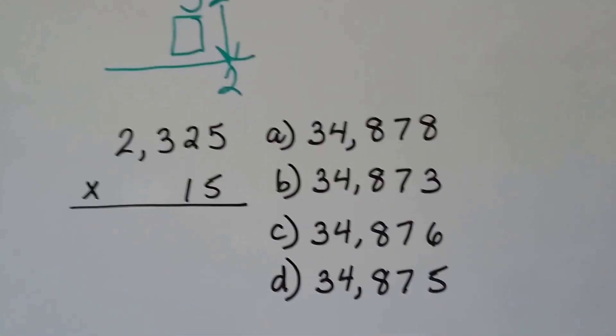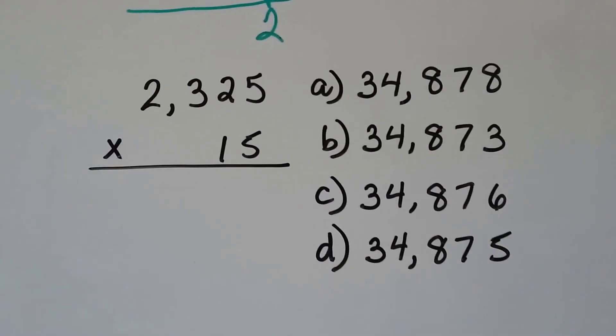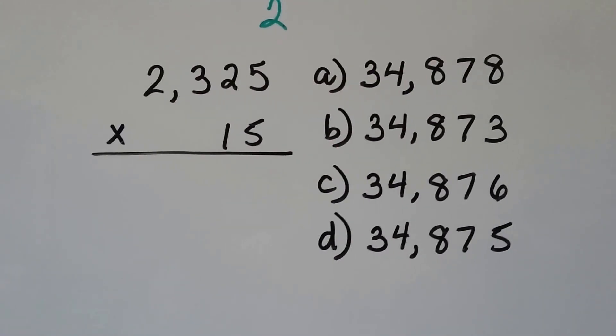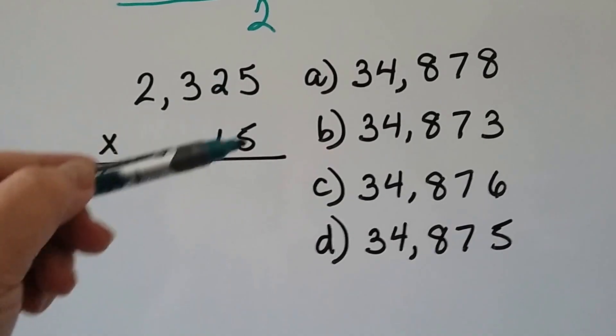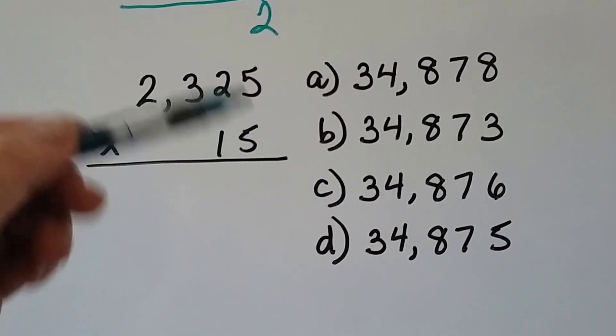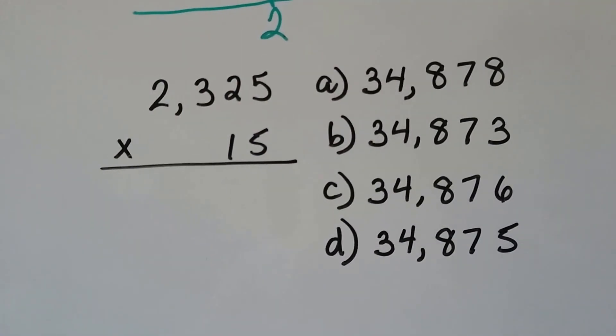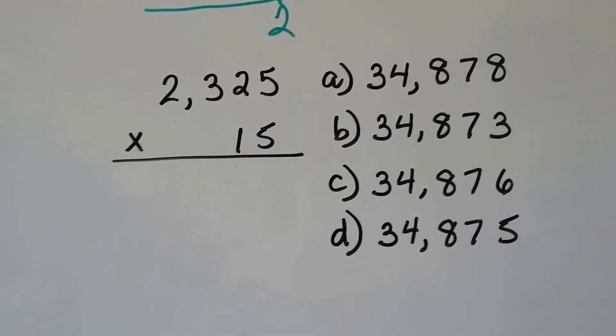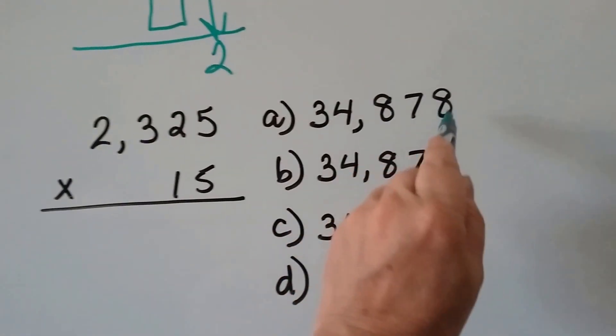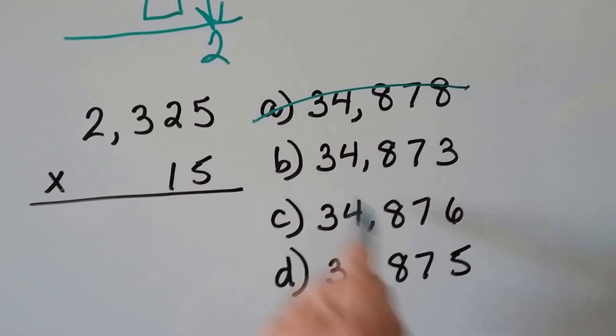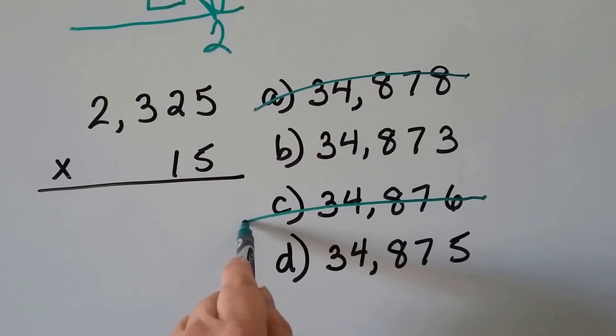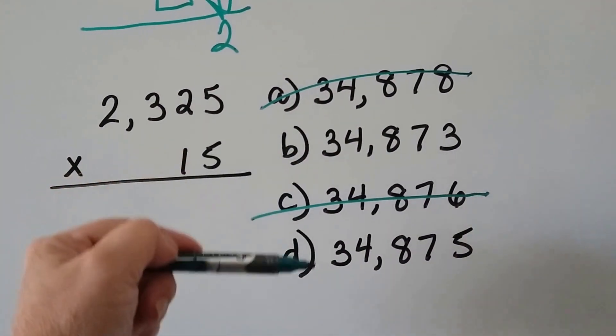Let's try this again. We've got 2,325 times 15. Well, that ends with a five, so it's odd. That ends with a five, so it's odd. So we have two odd factors. That means the answer has got to be odd. So that means we can get rid of this one because the eight's even. We can get rid of this one because the six is even, and it's either going to be B or D.